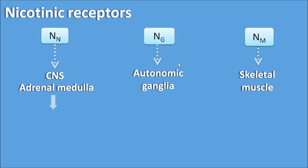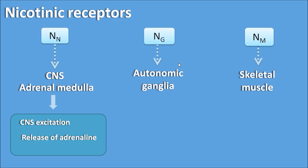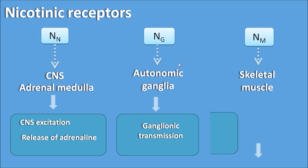Looking at the functional roles of these receptors: NN type are mainly responsible for CNS excitation and release of adrenaline from the adrenal medulla, which is responsible for the increase in blood pressure by acetylcholine at high dose. The functional role of ganglionic receptors is ganglionic stimulation — both sympathetic and parasympathetic — and ganglionic transmission. NM type receptors on skeletal muscle are responsible for skeletal muscle contraction.